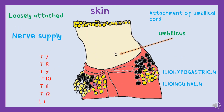The skin is really soft and loosely attached, except this funny portion right here known as the umbilicus. This scar, which is really attractive, is the attachment site of the umbilical cord. The lines of cleavage in the skin are constant and almost horizontal. The nerve supply of the skin is by the anterior rami of T7, 8, 9, 10, 11, and 12 thoracic nerves.